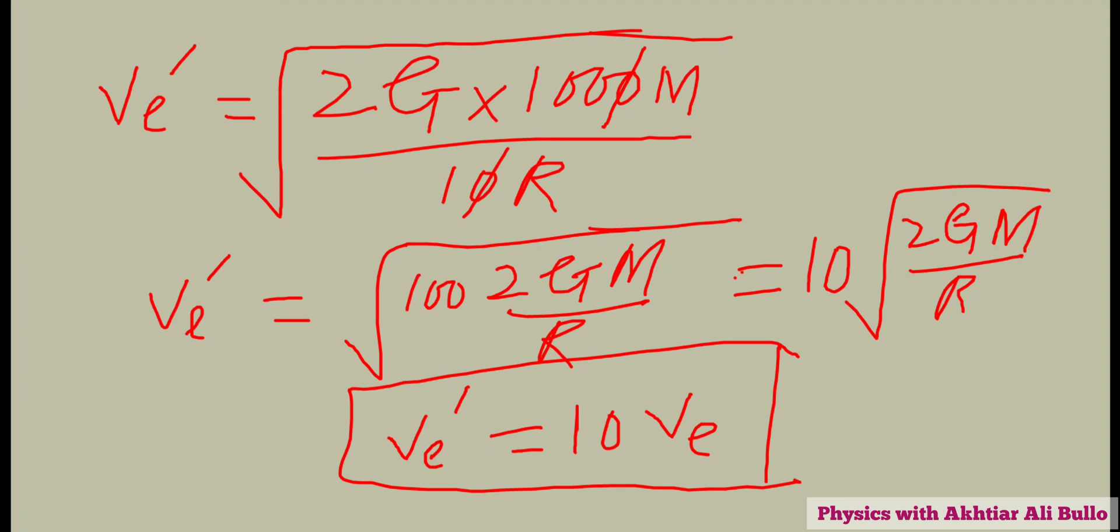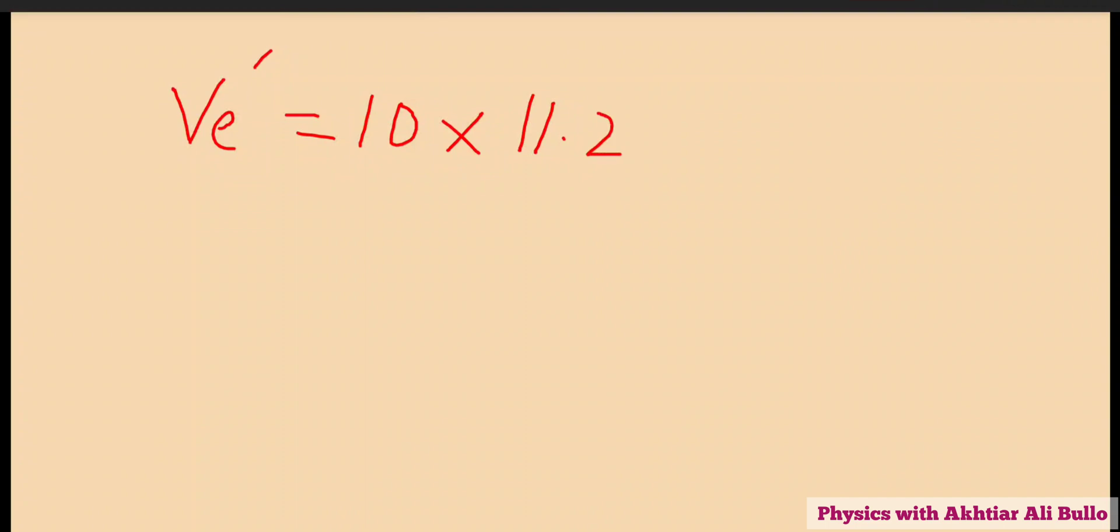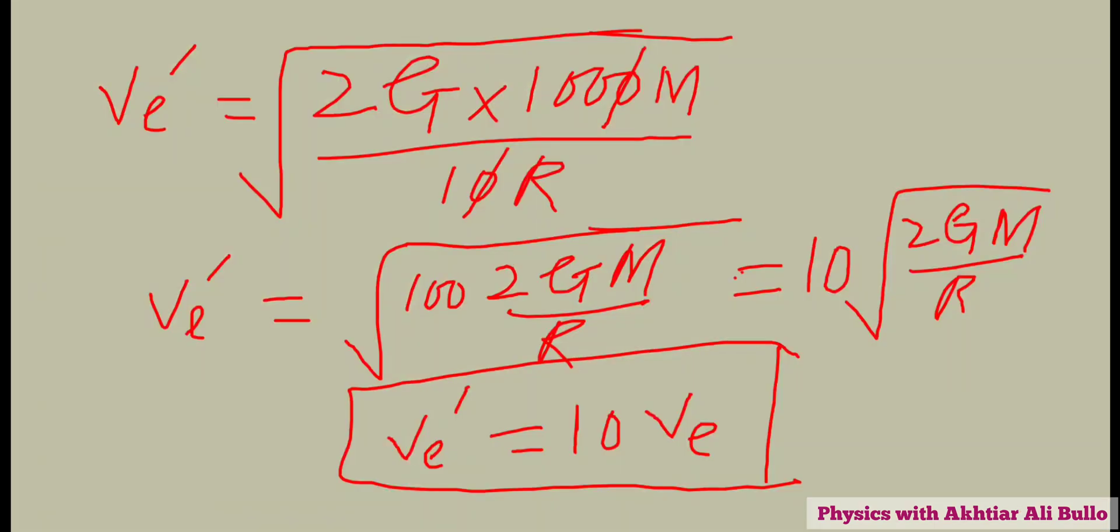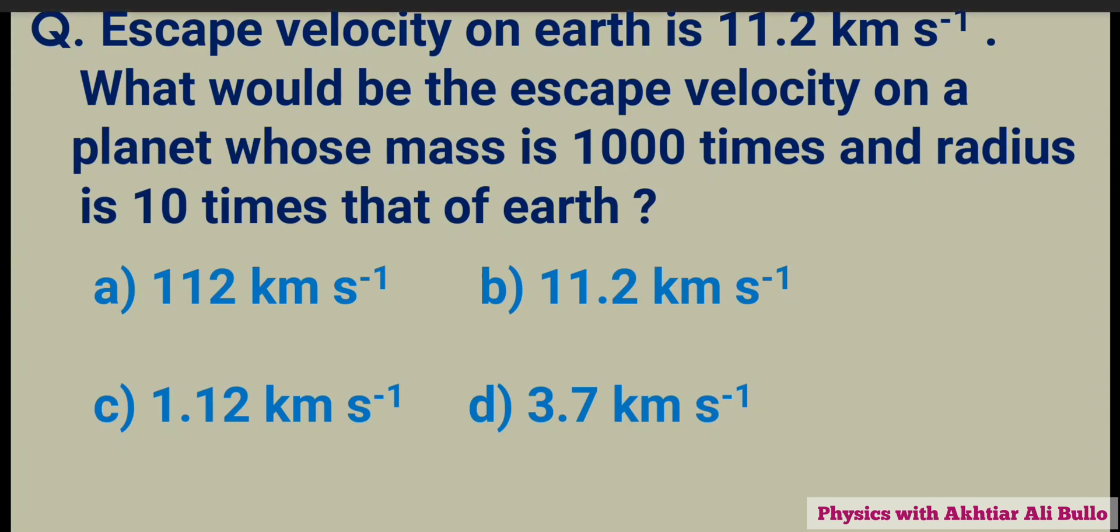Ve dash equals 10 times ve. The velocity on the surface of Earth is 11.2, so by putting the value, ve dash equals 10 into 11.2 km per second. The value of escape velocity on that planet is 112 km per second. The correct option is a, 112 km per second.